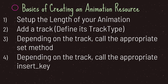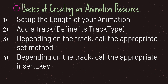Regardless of what track type you use, you need to follow this basic formula for creating an animation resource. First, declare your animation resource and set the length — by default it's one second, but you may want more. After that, add your tracks by defining the track type, then call the appropriate set method. Finally, call the appropriate insert key method, and you can insert as many keys as you want within the length you've set. We'll look at this in code at the end of the episode.